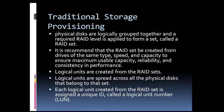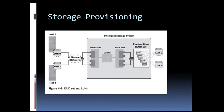LUNs hide the organization and composition of the RAID set from the host. LUNs created by traditional storage provisioning methods are also referred to as Thick LUNs, to distinguish them from LUNs created by virtual provisioning methods. As shown in the figure, a RAID set consisting of 5 disks has been partitioned into 2 LUNs: LUN0 and LUN1. These LUNs are then assigned to Host1 and Host2 for their storage requirements.